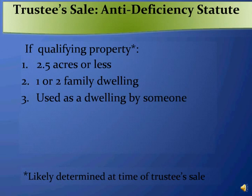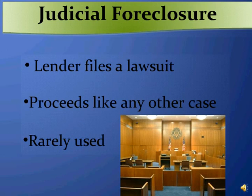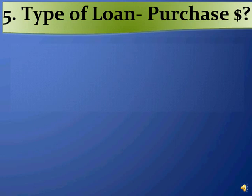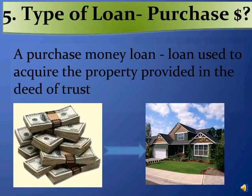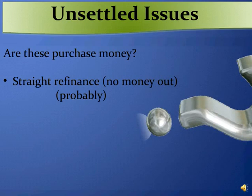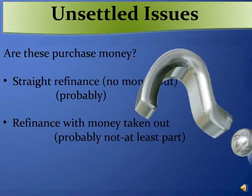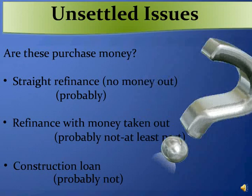Judicial foreclosure is the process where the lender forecloses by filing a lawsuit. It proceeds just like any other court case, but because of the amount of time and cost involved, judicial foreclosure is rarely used. If the lender is foreclosing by judicial foreclosure, we need to know whether the loan is a purchase money loan — a loan that was used to acquire the property provided in the deed of trust. A straight refinance where the borrower does not take any money out probably does qualify as a purchase money loan. A refinance where the borrower does take money out probably does not constitute a purchase money loan, at least to the extent of the money taken out. Finally, a construction loan probably does not qualify as a purchase money loan.